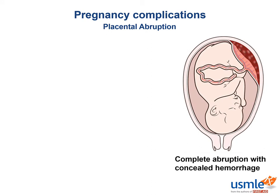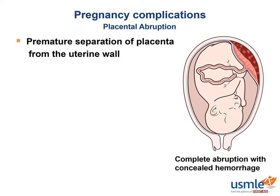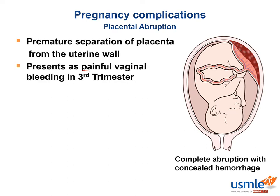Abruptio placentae is the premature detachment of the placenta from the uterine wall. This classically presents with painful vaginal bleeding and is typically in the third trimester. It is the most common cause of life-threatening bleeding in the third trimester. This condition unfortunately proves fatal to the fetus about a third of the time and can also cause maternal death in the worst cases. It can also lead to DIC in mom.